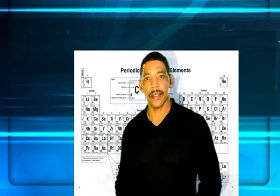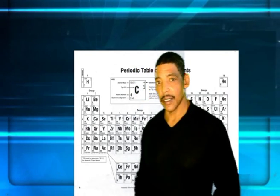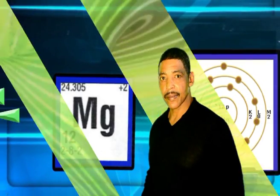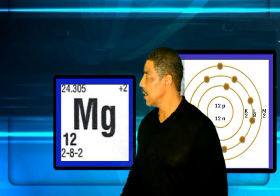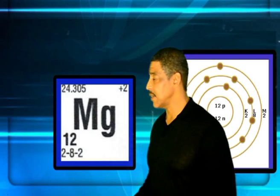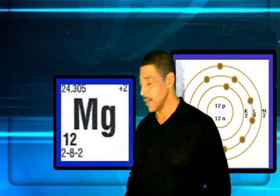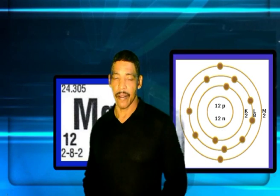Now let's consider the element magnesium, Mg, which is located in period 3 and group 2. According to the information found on the periodic table, the average atomic mass of magnesium is 24.305, with an atomic number of 12 and an electron configuration of 2-8-2.